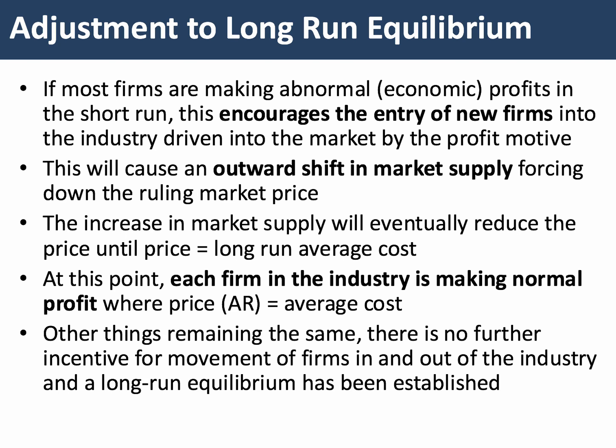In other words, the market price will equal the average cost for a representative firm in the market. When that happens there's no further incentive either for firms to come in if super normal profits are being made, or for some firms to leave the industry if subnormal profits are being made. So that will be the long run equilibrium, and I just want to show you that in the form of a diagram.